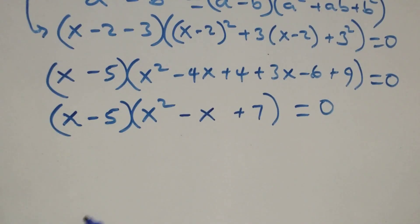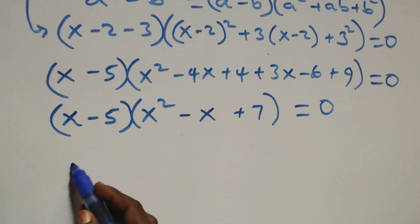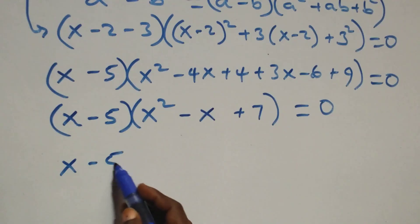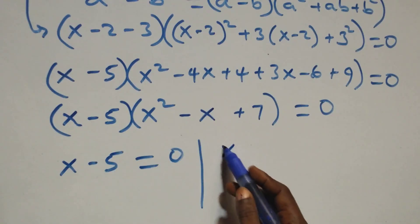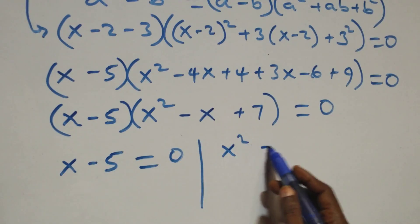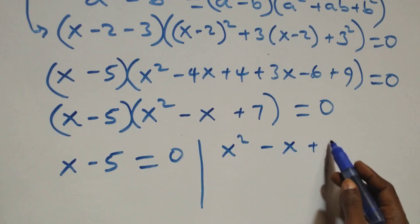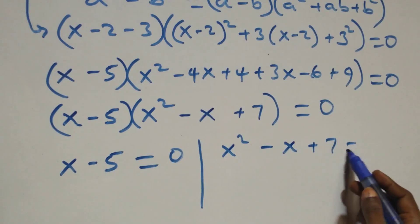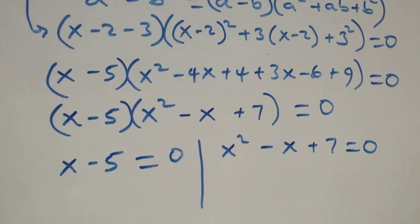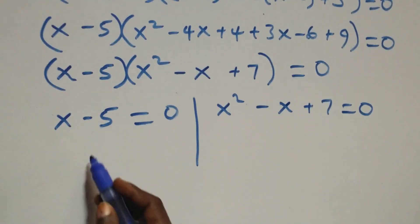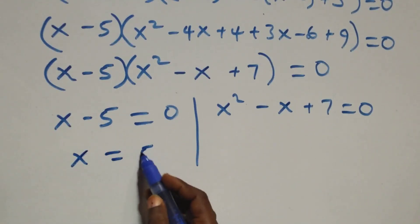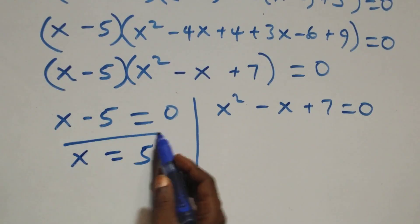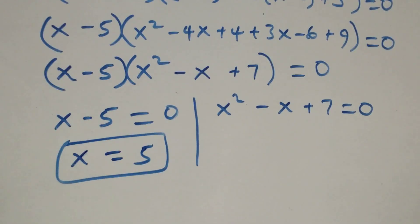Then here we have two possible cases: x minus 5 equals 0, or x squared minus x plus 7 equals 0. Solving the first: x equals 5, which is also a real solution.